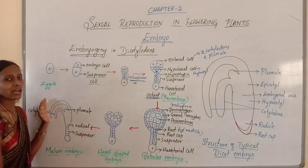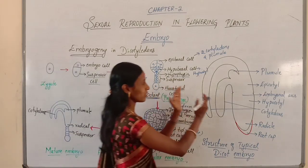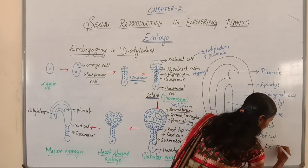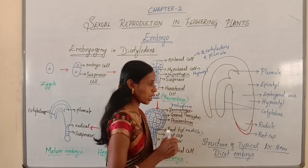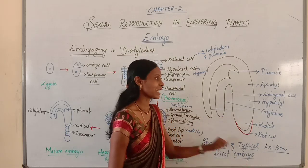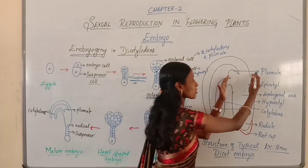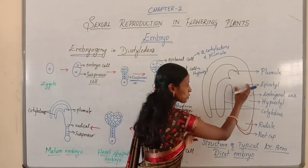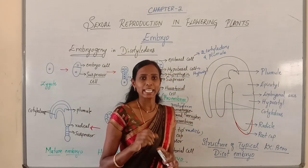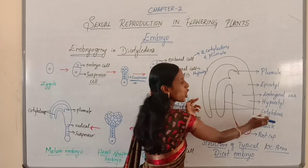Now we will discuss the structure of a typical dicotyledonous embryo. Taking bean as an example, a typical dicotyledonous embryo consists of two important regions: the embryonal axis and two cotyledons.